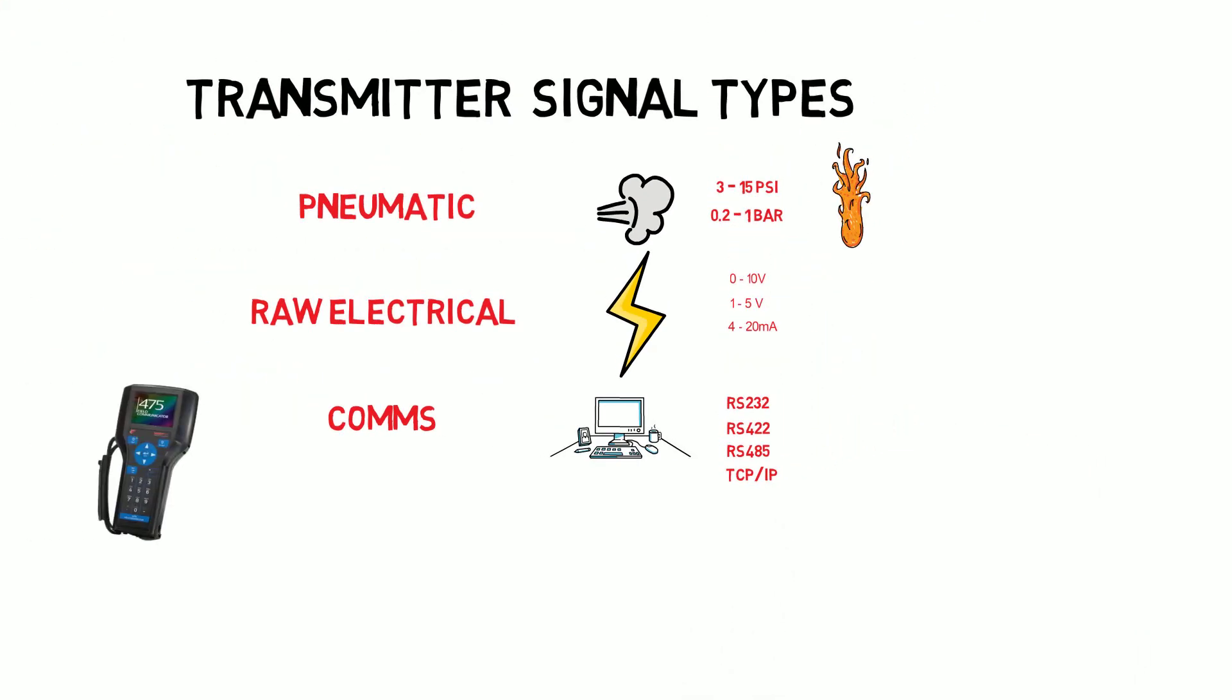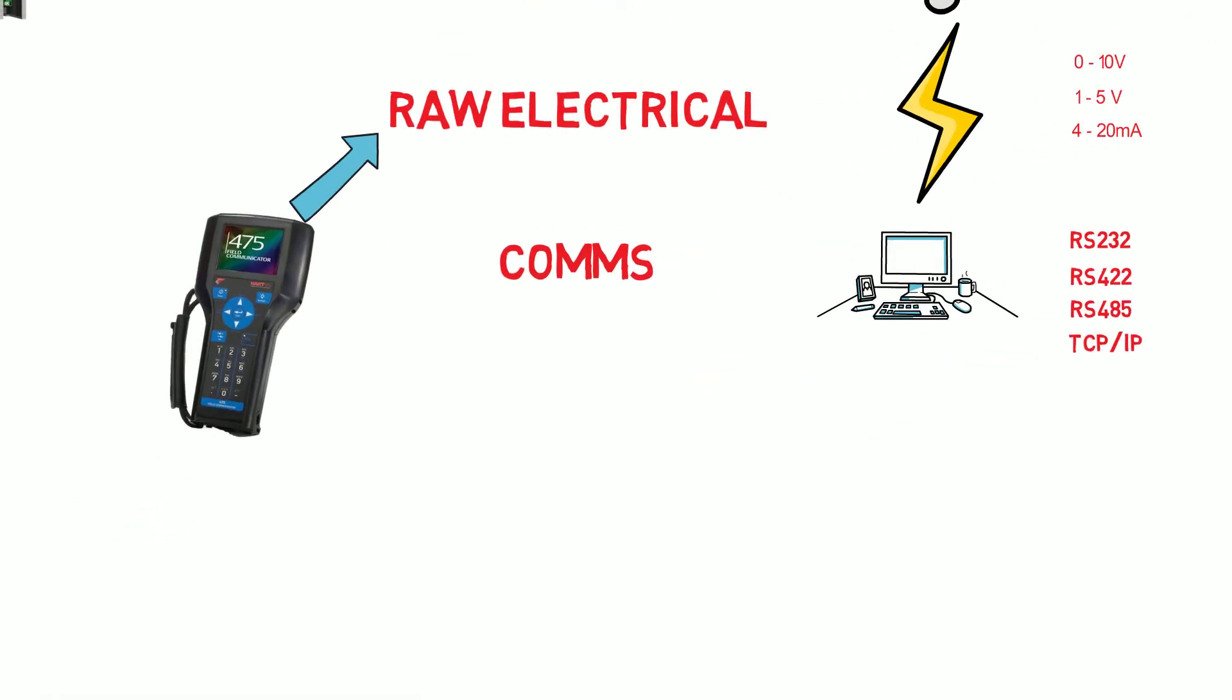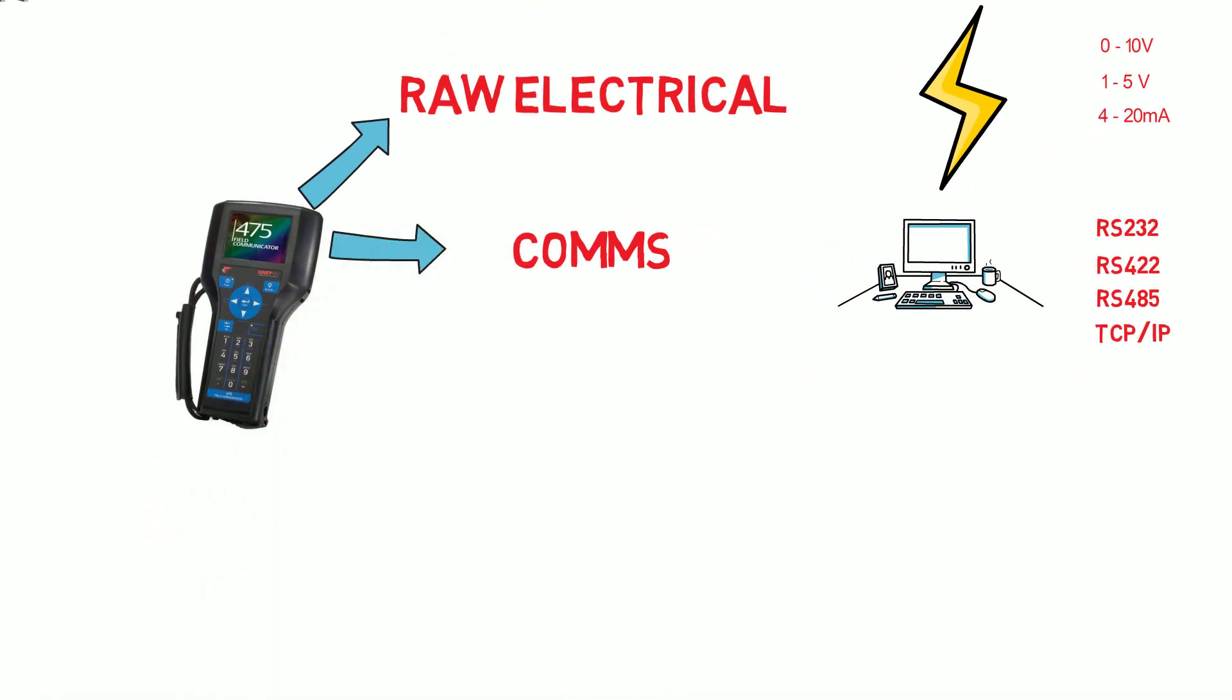So some instrumentation works with both raw signals and comms protocols. HART or Highway Addressable Remote Transducer works to transmit a comms protocol over an existing DC current signal.